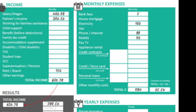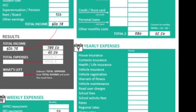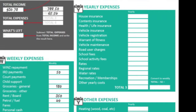Now here are the yearly expenses. I don't have my own house but I do have contents insurance. I also have car insurance, rego, no rates — luckily — but I do have a gym membership. So my yearly expenses are divided by 52 to get the weekly figure.